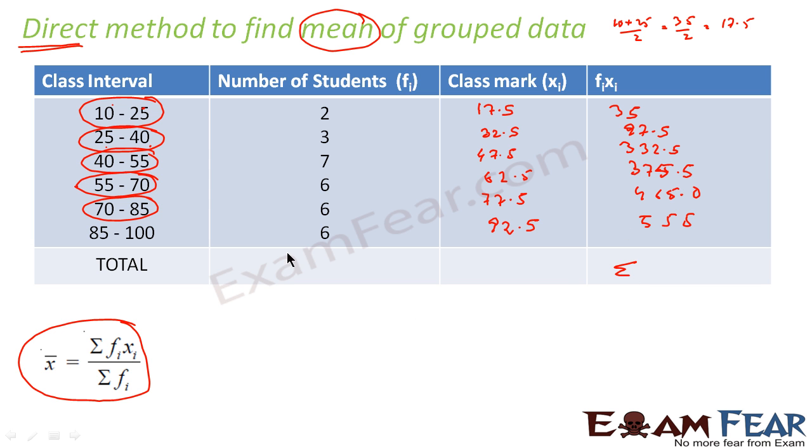What I need is sigma fi. So if I add this: 2 plus 3 is 5, plus 7 is 12, plus 6 is 18, plus 6 is 24, plus 6 is 30. If you add sigma fi, you get 30.